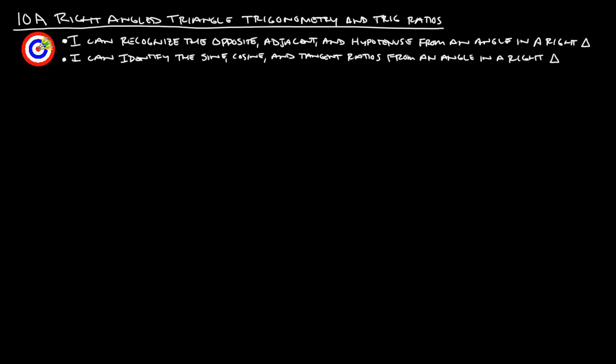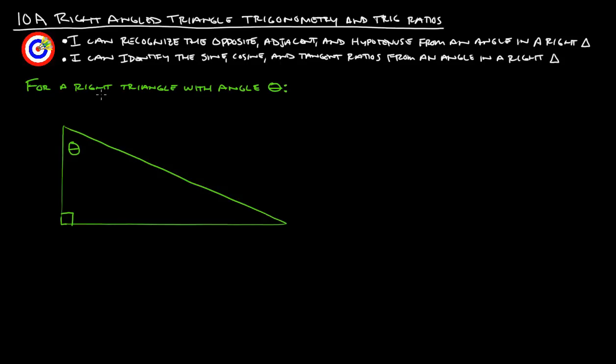So let's just get rolling here. This should be a pretty quick one. For a right triangle with angle theta, you have three different sides.